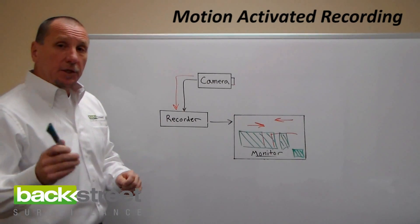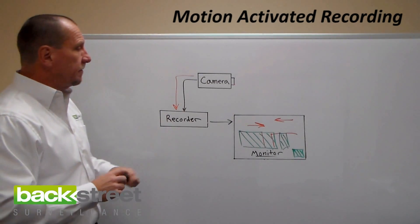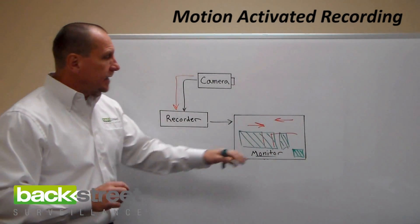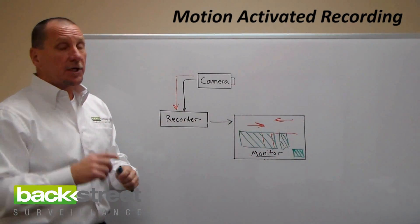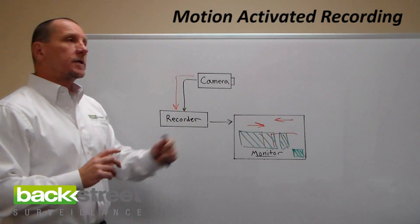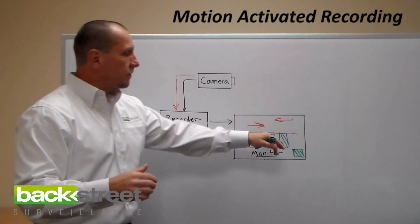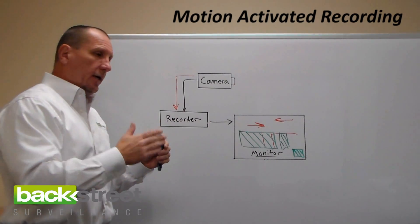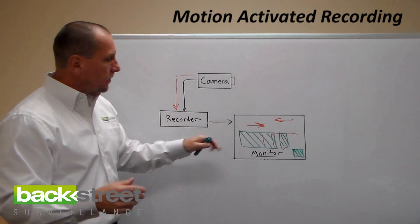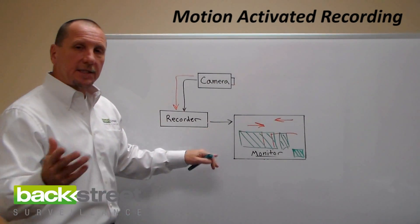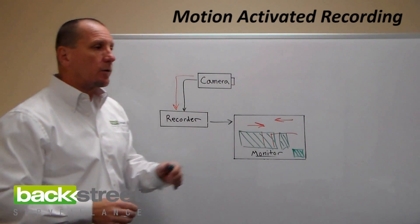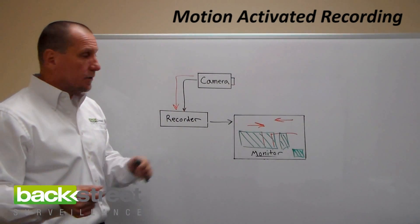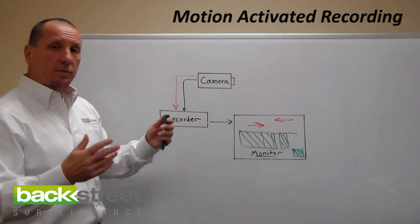The third adjustment is sensitivity. You need sensitivity control because, for example, a tree outside the detection area may cast a shadow that moves into it. If sensitivity is set too high, the shadow blowing in the wind will trigger recording. So you reduce the sensitivity level and test it by walking through the area yourself, making sure it triggers when you walk but not when the wind is blowing.